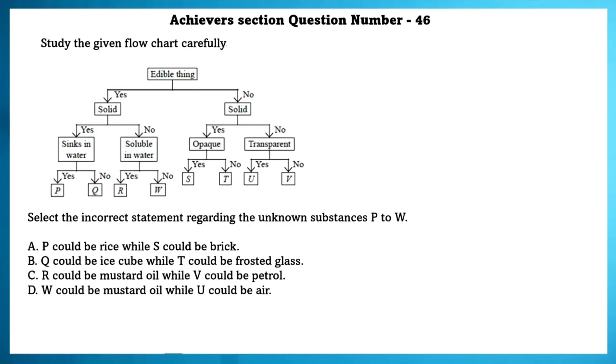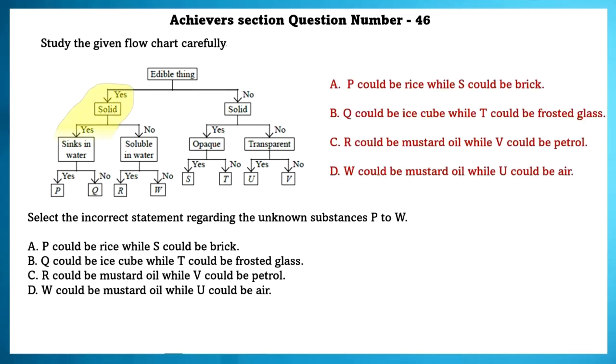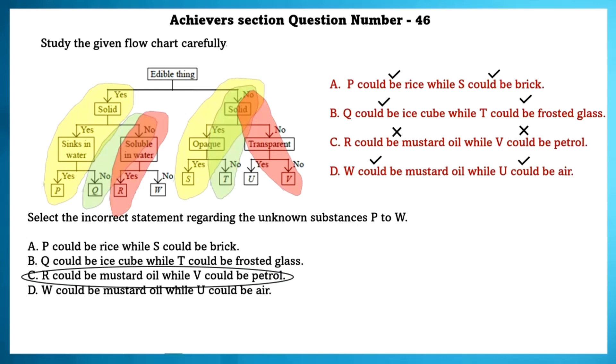Achieve section question number 46. Study the given flow chart carefully. Select the incorrect statement regarding the unknown substances P to W. P could be rice while S could be brick. Q could be ice cube while T could be frosted glass. R could be mustard oil while V could be petrol. W could be mustard oil while U could be air. As we can see here, the C option is the incorrect option.